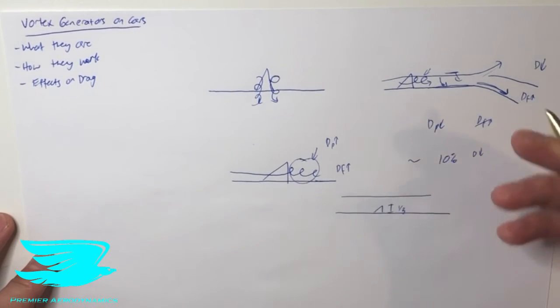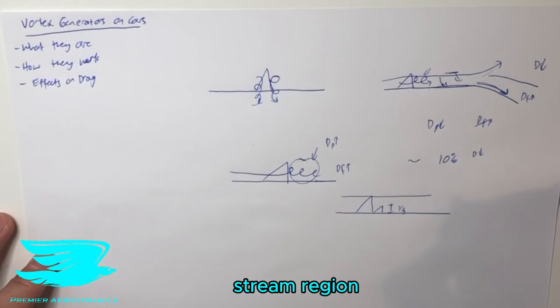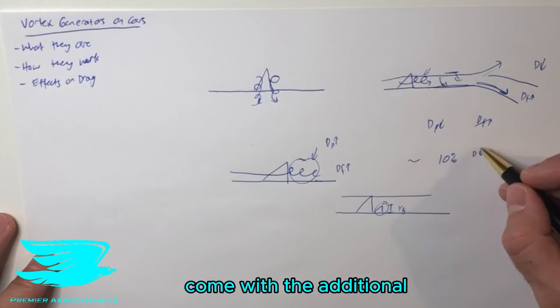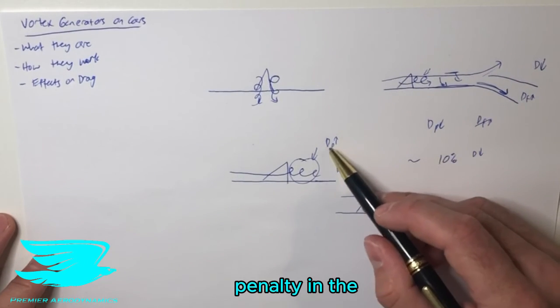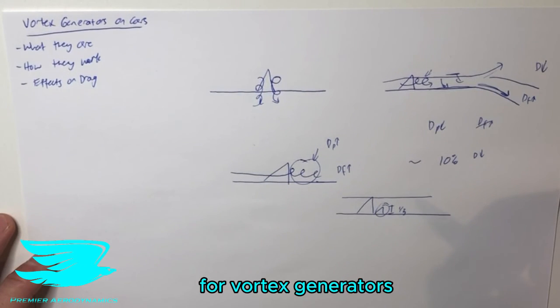Whereas historically, vortex generators went into the entire boundary layer, went to the freestream region. These micro-vortex generators come with the additional drop in the drag, but they don't get this penalty in the pressure drag nearly as much. So that's a caveat to vortex generators.